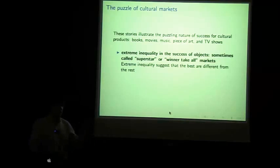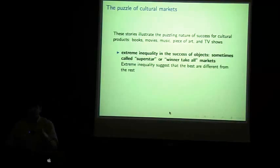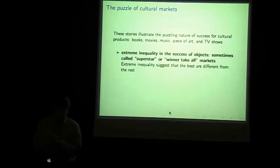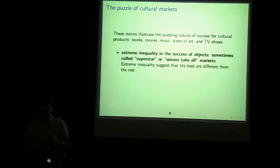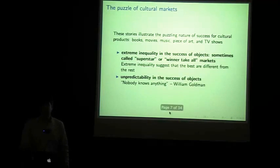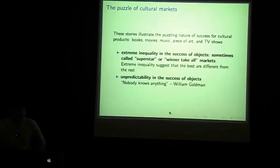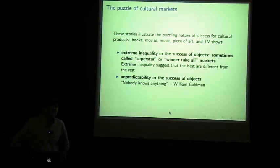So more generally than these specific examples, there's a general pattern in the market for cultural products - these are books, movies, music, art, and TV shows - where on the one hand we see extreme inequality of success. These are sometimes called superstar markets or winner-take-all markets. And this extreme inequality seems to suggest that these winners are somehow different or better than all the other things. But yet, at the same time, we see tremendous unpredictability of success. This is very nicely summarized by the screenwriter William Goldman, who said, 'Nobody knows anything.'